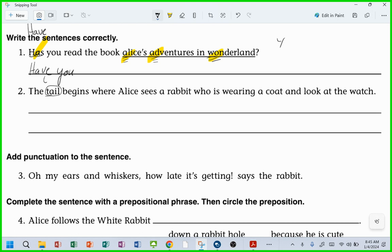That is the homophone mix-up. The tail begins where? Is it where? That's right, we're talking about time, not location, right? So what should that be right there? The tail begins not where but when. The tail begins when Alice sees a rabbit. Would it be who is